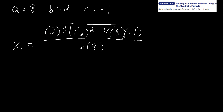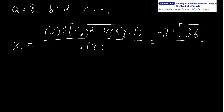Now let's do the arithmetic. Negative 2 stays as negative 2. Under the radical: 2 squared is 4. Then negative 4 times negative 1 is positive 4, times 8 is positive 32. So we have 4 plus 32 equals 36, which is a perfect square. The denominator is 2 times 8 equals 16. So we have negative 2 plus or minus the square root of 36, all over 16 — which simplifies to negative 2 plus or minus 6 over 16.